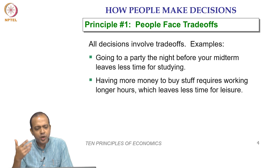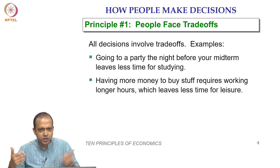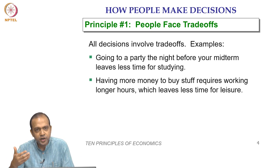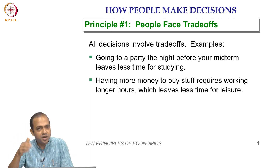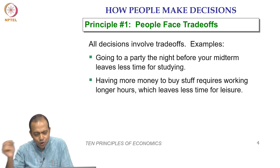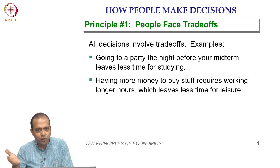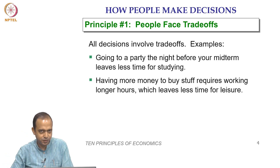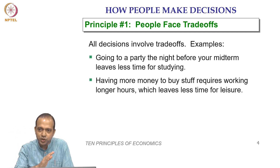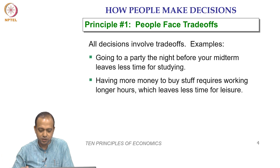Having more money to buy things requires working longer hours. If you want a big house, a bigger car, or expensive clothing, you need more money, which means you have to work more. All of us get 24 hours in a day, out of which 6 to 8 hours we sleep. The rest we can either work or take leisure — spend time with family or go for a vacation. More time for work means less time for leisure. That is a trade-off.